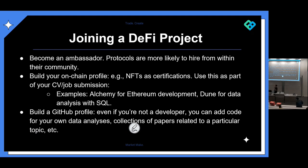Building your on-chain profile can include NFTs and certifications that you can use as part of your CV or job submission. Two good examples are Alchemy — they run courses like Ethereum development for those interested in programming or smart contracts, and once you complete the course you get an NFT badge. Another is Dune Initiation for data analysis with SQL. Also build a GitHub profile even if you're not a developer — you can put up scripts, data analysis code, or even collections of papers on a particular topic as a bank of knowledge.